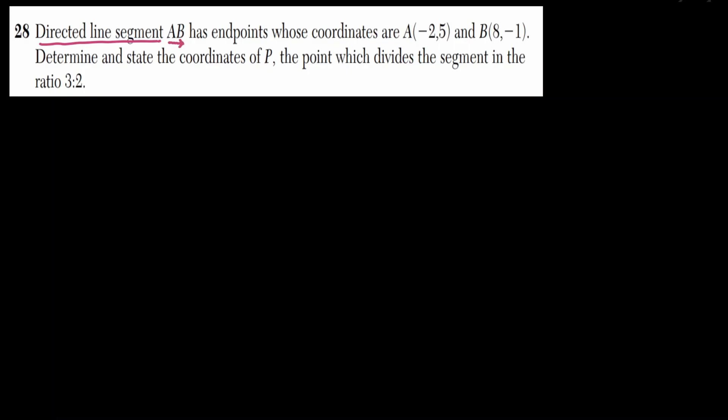In question 28, we have a directed line segment AB. When working with directed line segments, there is a direction — starting with letter A going to B. The endpoints are A at negative 2 comma 5 and B at 8 comma negative 1. Let's roughly sketch this on a coordinate plane.